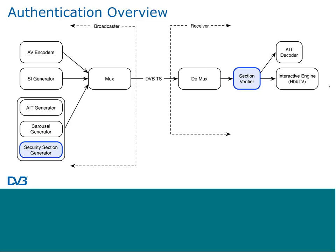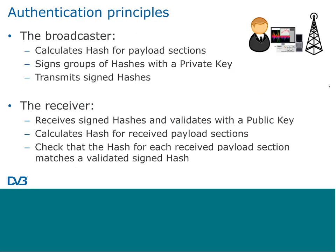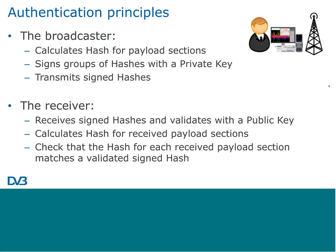Unlike previous systems like MHP, there's no concept of secure and unsecure modes inside HbbTV. We're not tampering with the HbbTV engine — we're providing a firewall between the HbbTV engine and the broadcast as it arrives. The broadcaster calculates a hash — a cryptographic function — on each payload section, whether an AIT section or an object carousel section. Groups of these hashes are signed with a private key which the broadcaster keeps secure, and that signed hash message is transmitted.